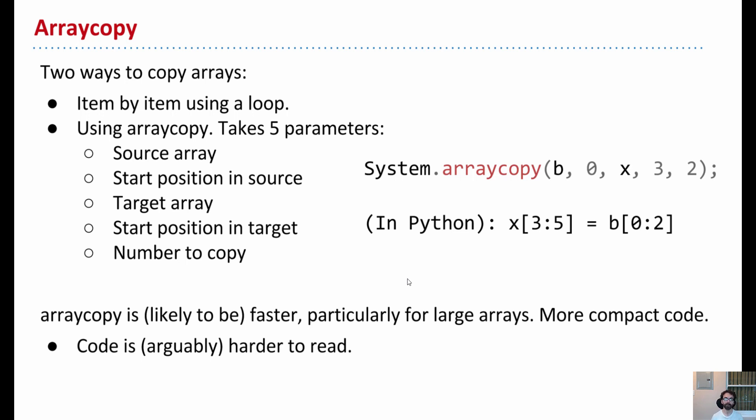Now, the alternate approach is to use array copy. And this function takes five parameters. So when I see system.array copy, it says, copy from the array b, starting at index 0, to the destination array x, starting at x's position 3. And by the way, copy two of those. OK?